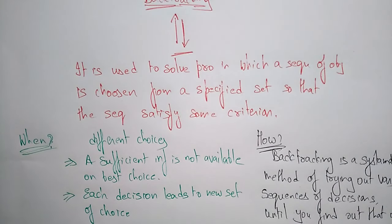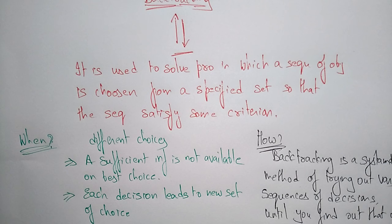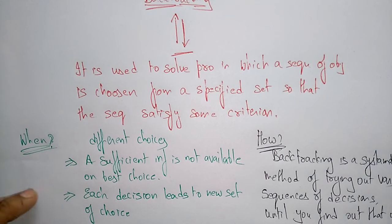Whenever you have a sequence of objects to be chosen from a specified set, you check the criteria and select the best path. If you didn't get your solution, you go back, take another sequence of decisions, and check forward. If you still don't find the solution, go back again and take another decision until you reach your solution. That is backtracking.